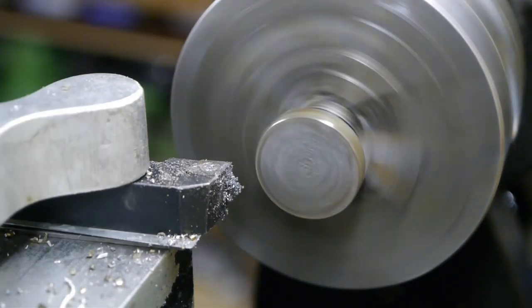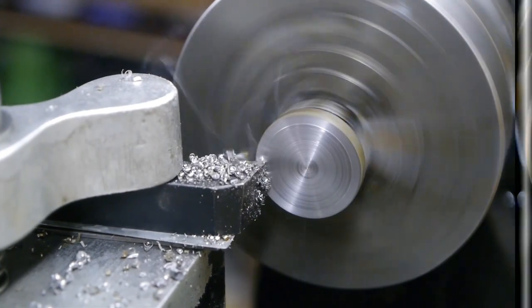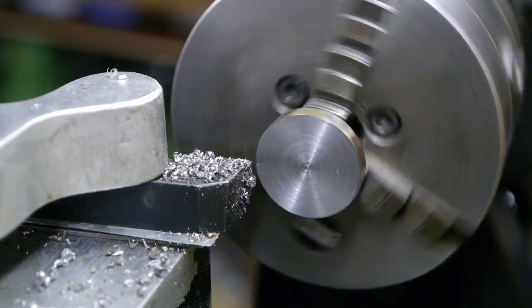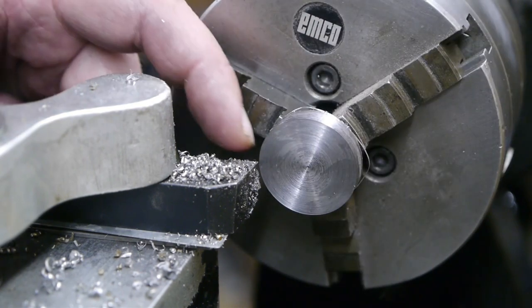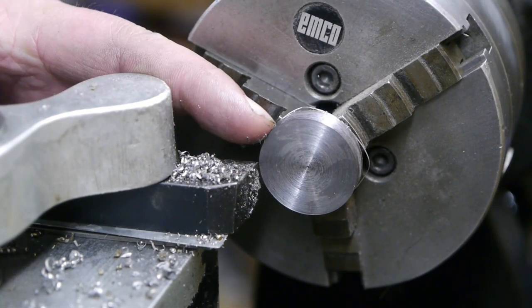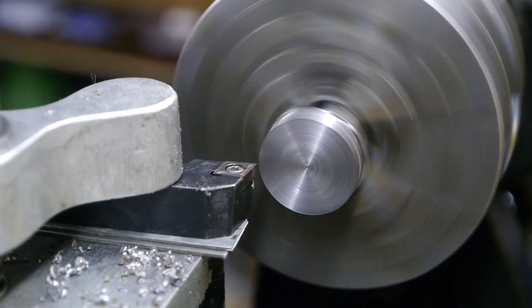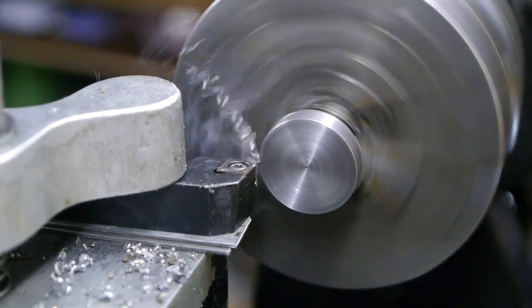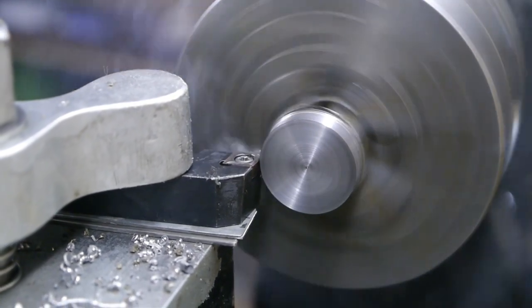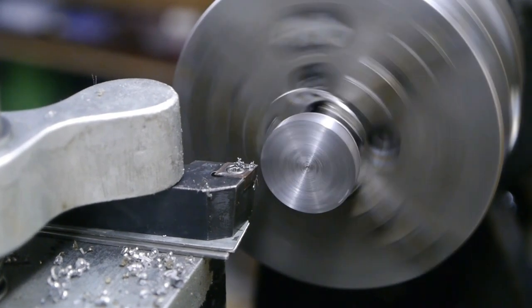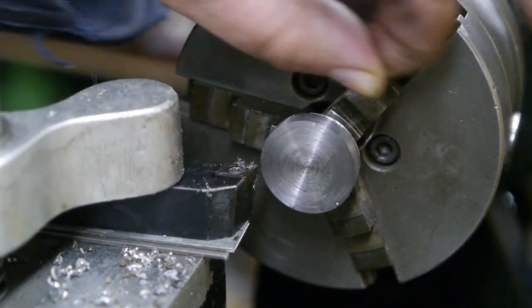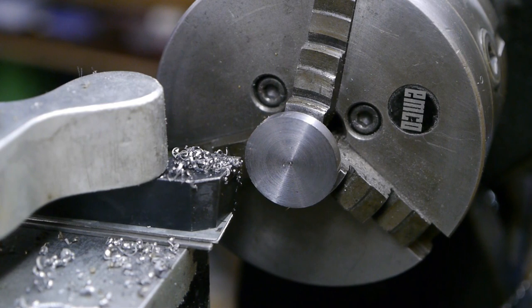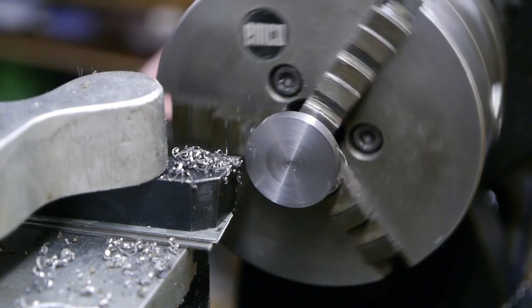I think the insert might be getting dull. I flipped the insert around. That's better. I should be using high-speed steel, but I'm too lazy to grind a tool bit. So we're at 4.4 millimeters. I'll take off a little bit more and then I'll have to change the battery because it's been doing the blinky blinky for a while.